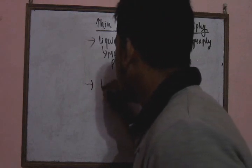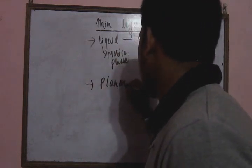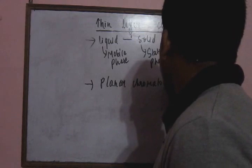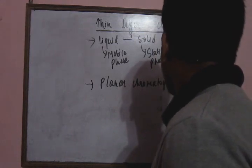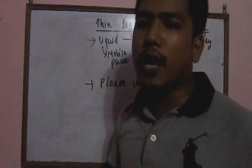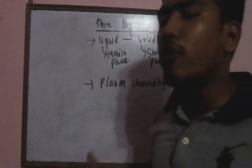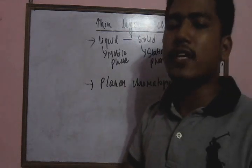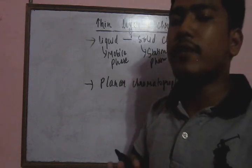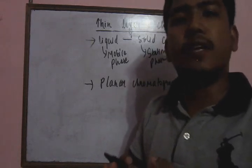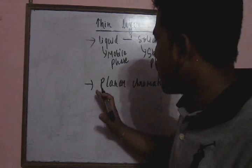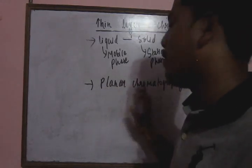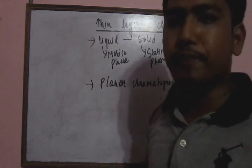TLC is also called planar chromatography. It is called planar chromatography because it is performed on a plane sheet. The plane sheet may be a glass plate, an aluminium plate, or a plastic plate.